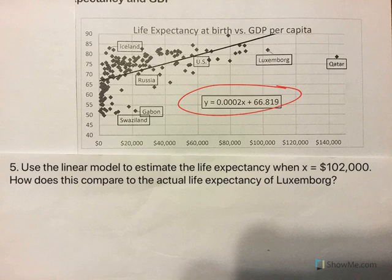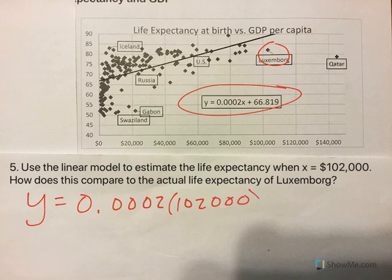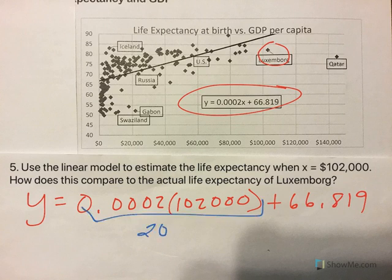Use the linear model to estimate life expectancy when x is $102,000 — so we're kind of talking about Luxembourg here. We're going to plug in $102,000 for x, because x is the number of dollars. We multiply .0002 by 102,000 first, and we get 20.4, and then we add 66.819, and we get a life expectancy of 87.219 years.